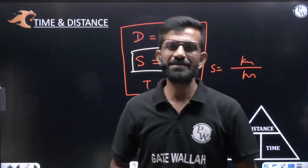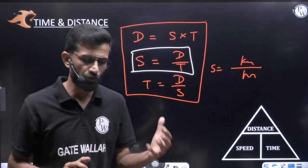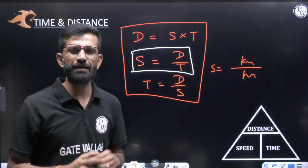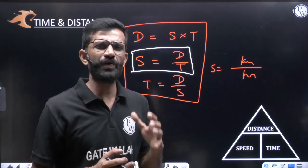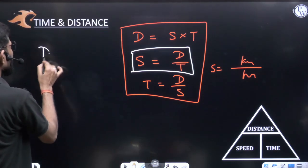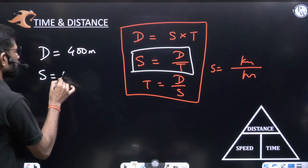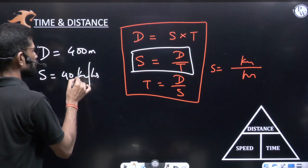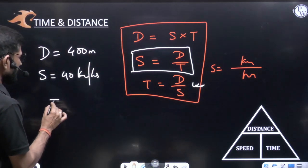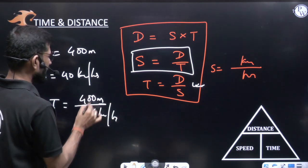Moving further, before going into average speed and relative speed, let me highlight something important for competitive exams. For example, if distance is 400 meters and speed is 40 km/hr, and you are asked to find time, you cannot just write 400/40 = 10, because the units don't match — you would get meters per kilometer per hour, which is not a valid unit of time.